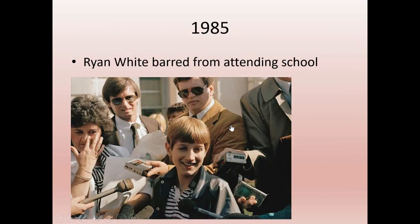In 1985, Ryan White gets kicked out of middle school for being HIV positive. His family took the school district to court, but the community response was not supportive — people shot out the windows of their family house and the Whites had to move. The school district defended their decision by pointing out he could get a bloody nose playing dodgeball and the ball could hit someone else, which led to questions such as why are so many people bleeding in gym class.